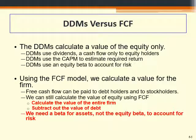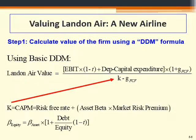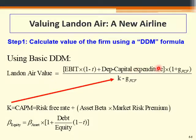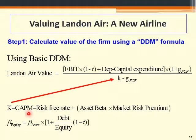Here is a quick review of the difference between the Dividend Discount Model and the Free Cash Flow approach. The formula has two components: a numerator and a denominator. The numerator is the Free Cash Flow, and the denominator is the discount rate minus the growth rate of Free Cash Flow. We also introduce a new concept: the required rate of return, k, calculated using the CAPM — the Capital Asset Pricing Model.